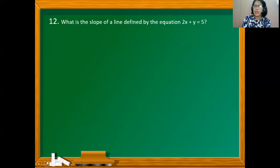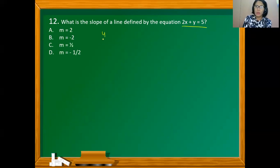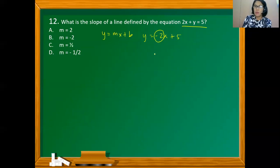What is the slope of the line defined by the equation 2x + y = 5? We will express this in slope-intercept form y = mx + b. Isolating y, we have y = −2x + 5. The numerical coefficient of x is the slope, which is negative 2. So the answer is B.